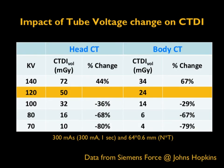The impact of tube voltage on CTDI is explained in this table, based on measurements using phantoms. The second column is the CTDI for the head CT phantom and the fourth column is the CTDI for the body phantom. The most common tube voltage used in CT is 120 kV. By changing the tube voltage from 120 to 100 kV while keeping all other factors — MAS and detector setup — the same, there is a decrease of 36% dose for a head CT phantom and nearly 30% for a body CT phantom. Going from 120 to 80 kV for a body protocol, the radiation dose can decrease by almost 67%.